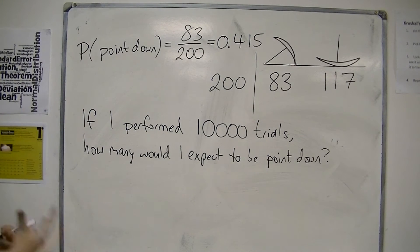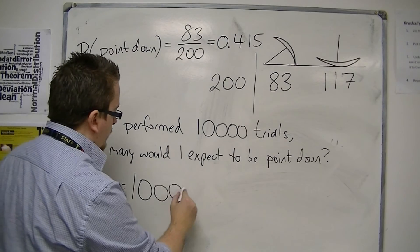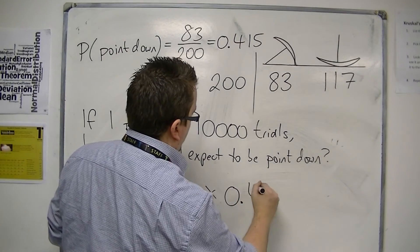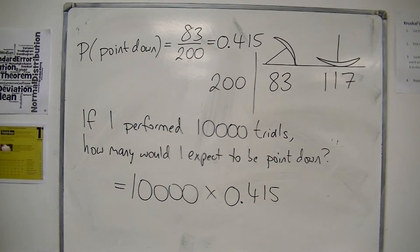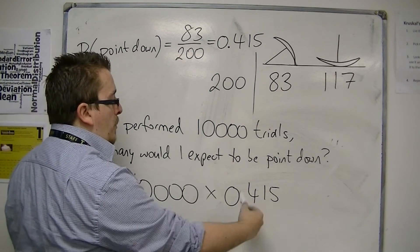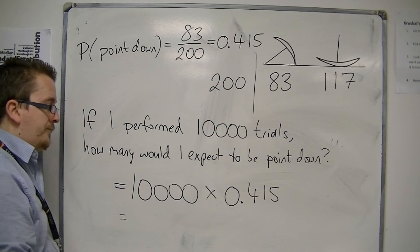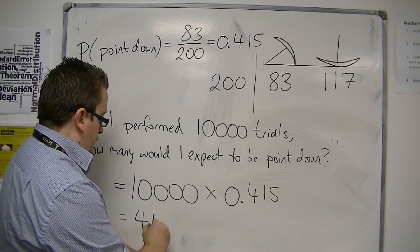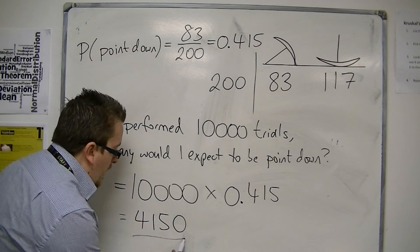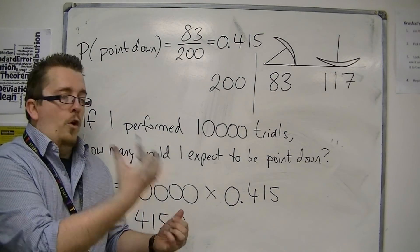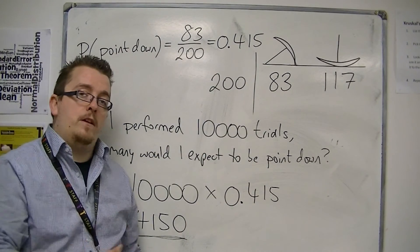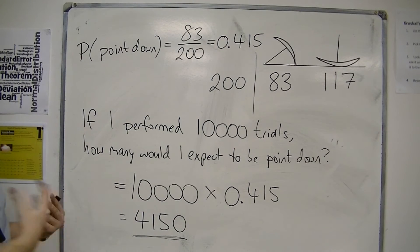Well, that expected amount is equal to the number of trials multiplied by the probability. So this is a proportion of the number of trials. I would expect four thousand one hundred and fifty of those trials to have the drawing pin being point down. So that's what I would expect.